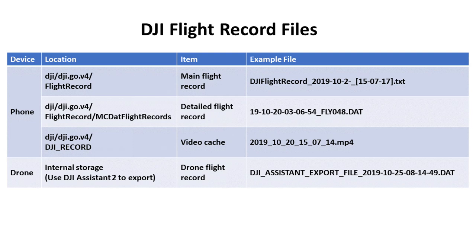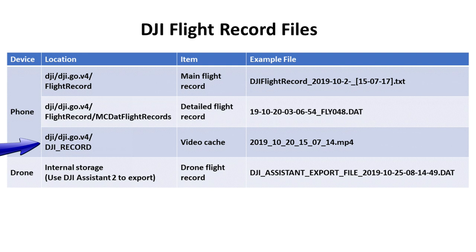Quick recap: there are three files that can be very valuable to you that exist on your phone or mobile device, regardless of whether your drone was recovered or not. You've got your main flight record, which is terrifically full of data. There's a DAT file with further detailed flight information. And finally, you've got a video cache that provides the camera view of what was going on during your flight. The fourth file is on the drone itself, assuming you can recover it, and that file contains even more detailed flight information that DJI support will use to help you analyze what went wrong.